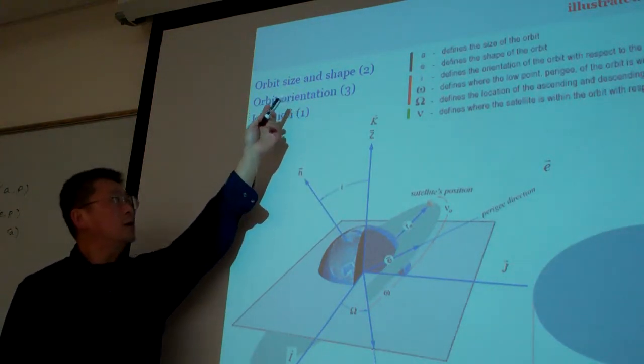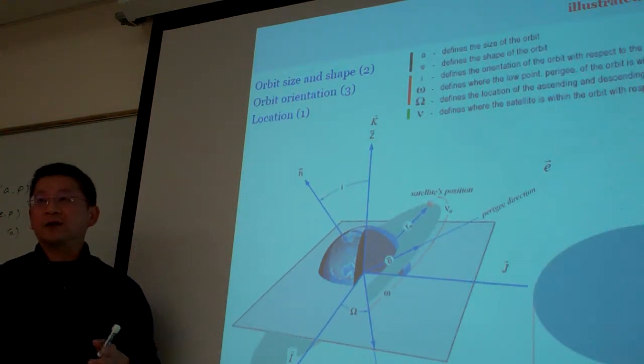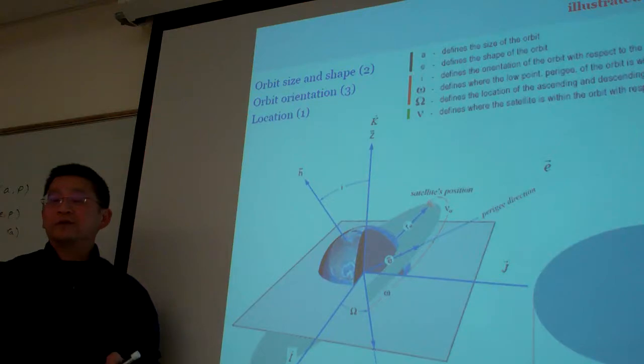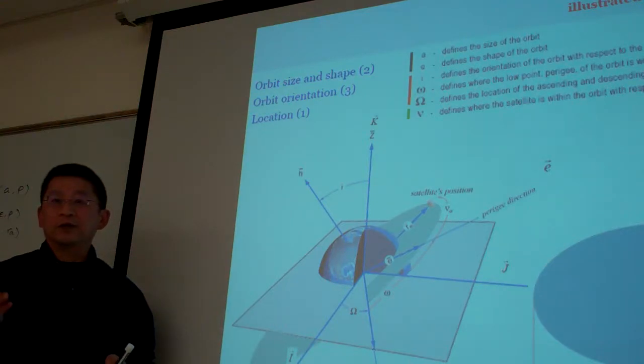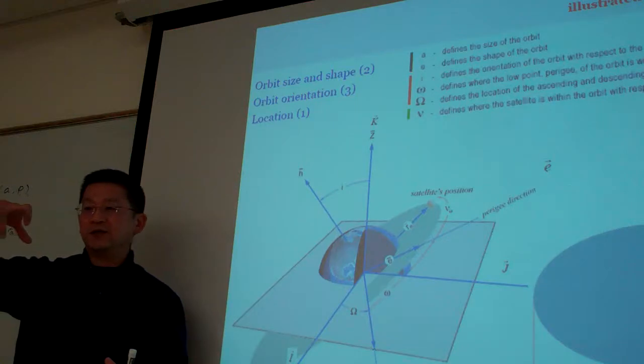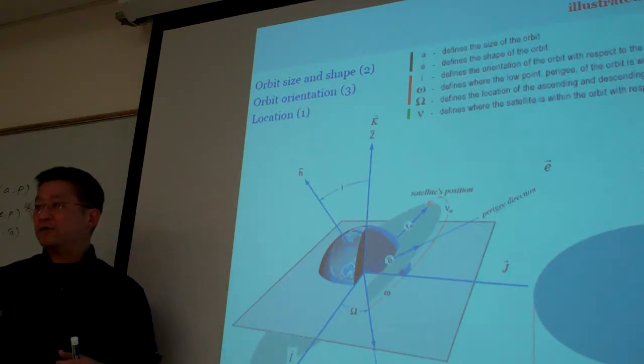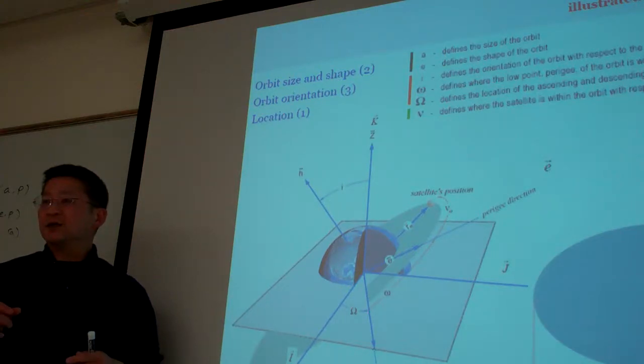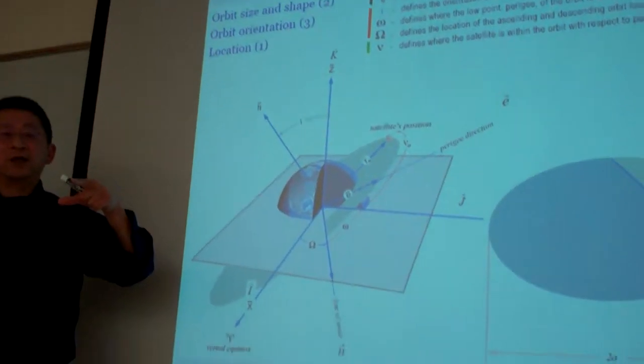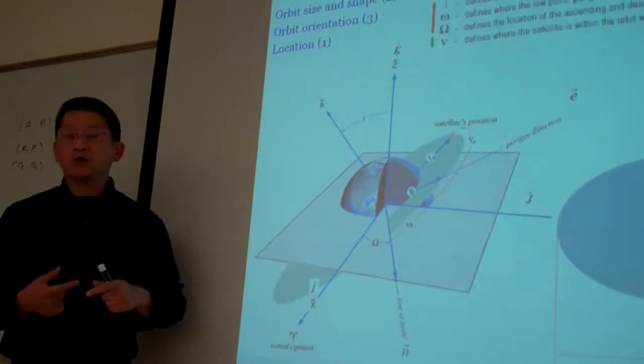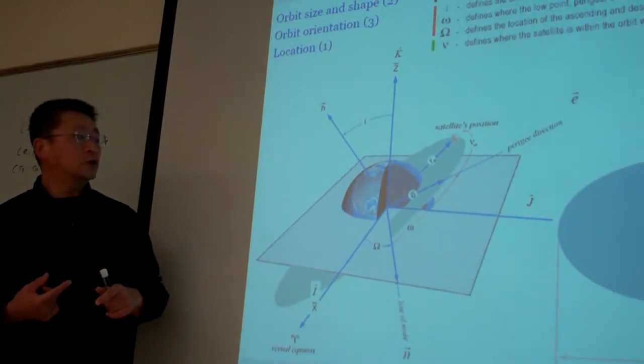And also, we're going to use three parameters to define the relevant positions and orientation of this orbit in space. Sometimes the orbit is tilted in this way or tilted in that way. We need to find a way to uniquely address this kind of orientation in terms of the coordinate systems.